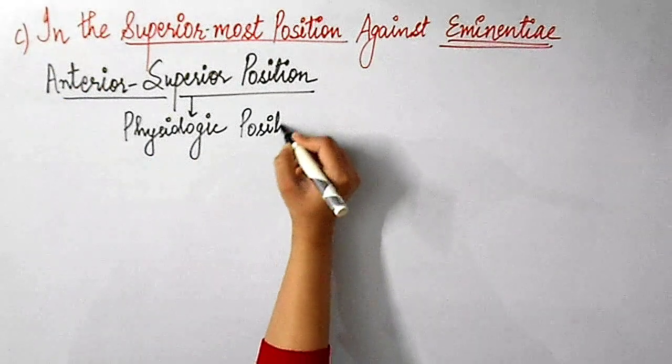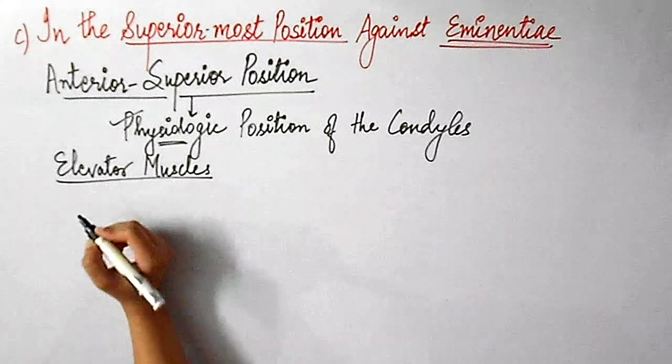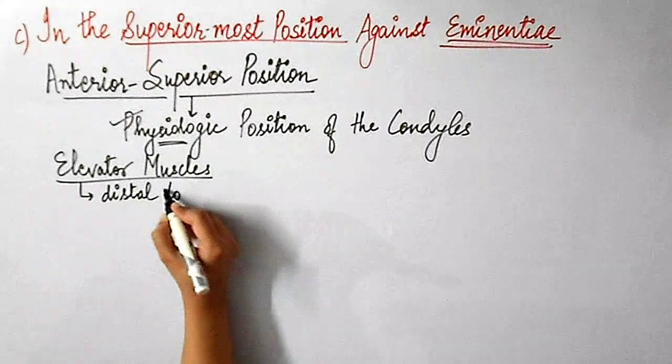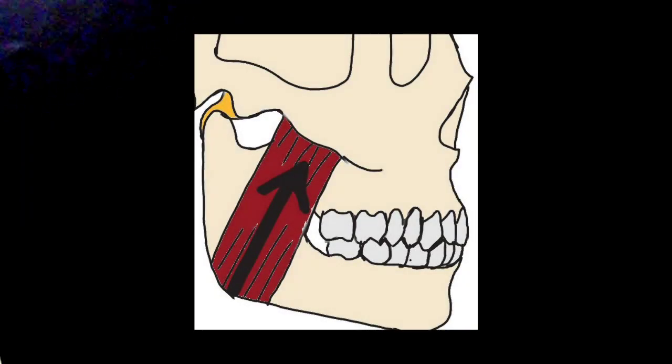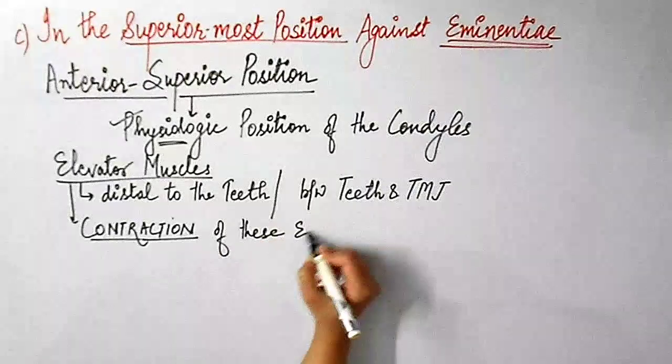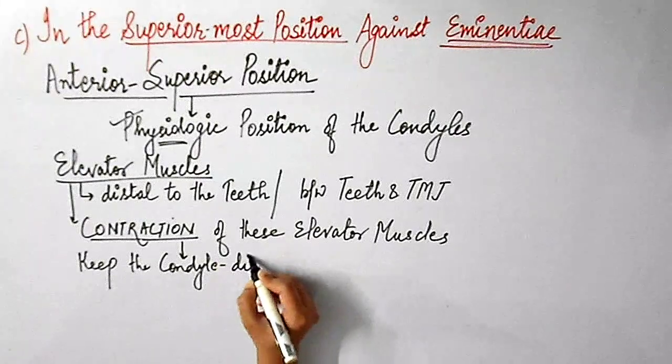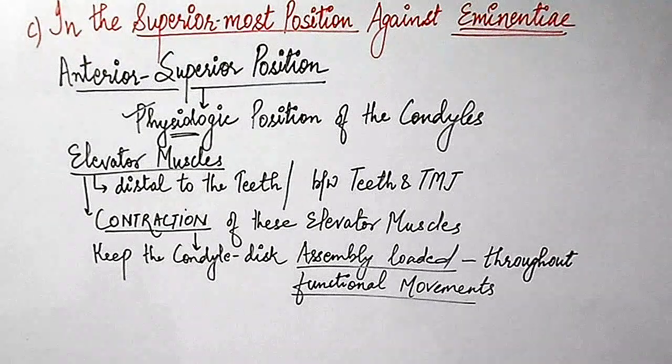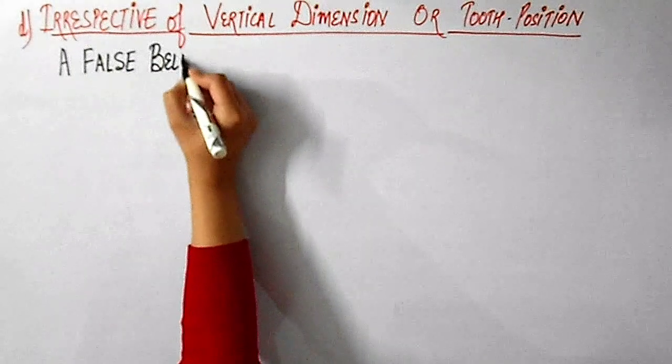Now the elevator muscles are distal to the teeth, or we can say that they are in between the teeth and the TMJ. As we can clearly see in this picture, the elevator muscles are present distal to the teeth, or we can say they are present in between the teeth and the TMJ. The contraction of these elevator muscles keep the condyle disc assembly loaded throughout the functional movements.